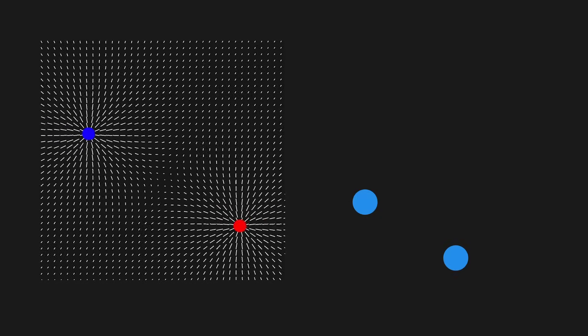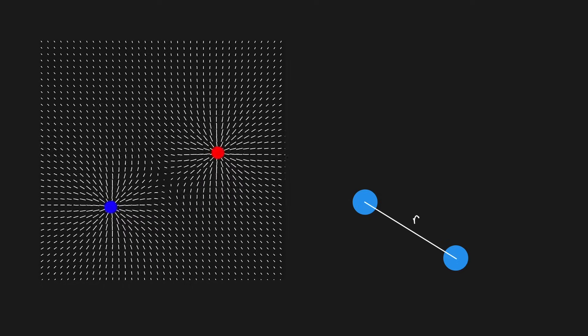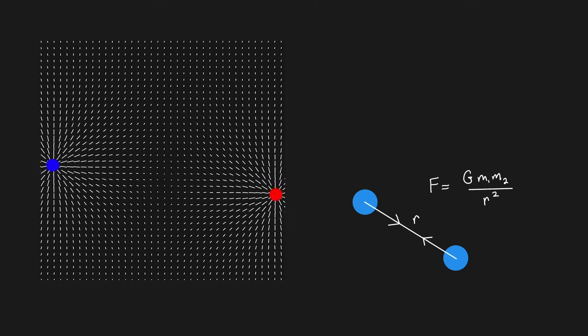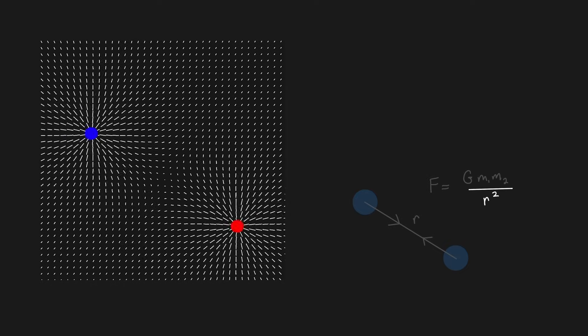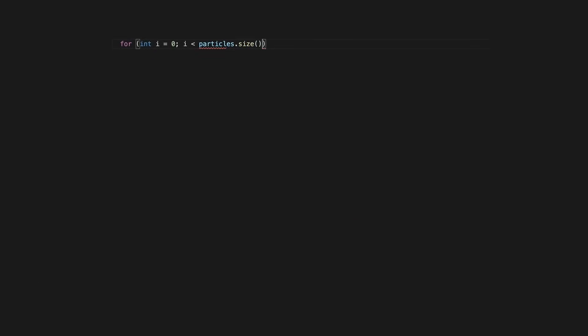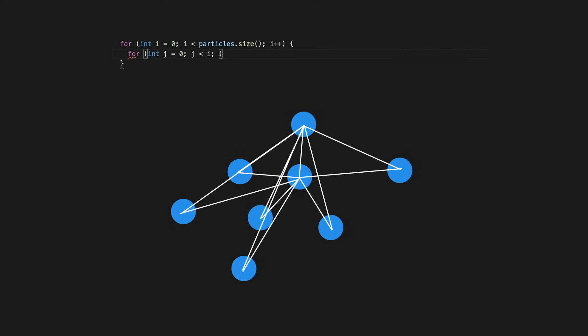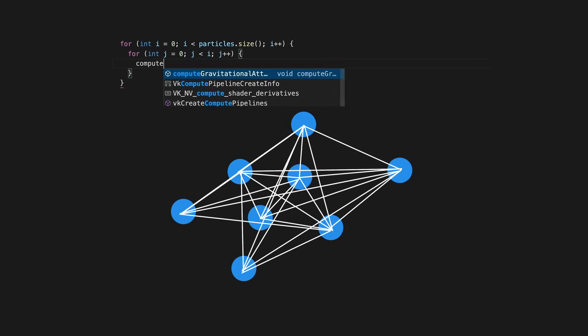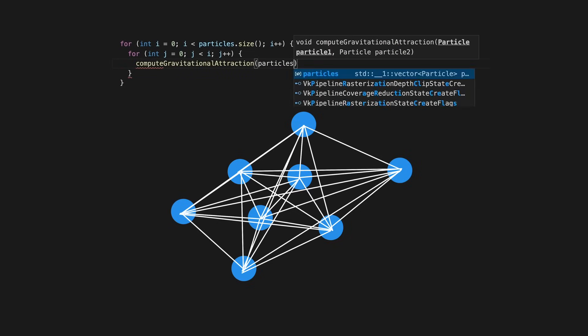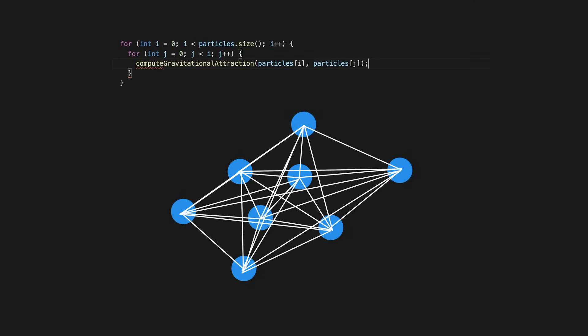I've recently been experimenting with gravity systems. The guiding principle is that every particle exerts a force on every other particle proportional to the inverse square of the distance between them. A very simple implementation may look something like this, where we iterate through each possible pairing and compute the equal but opposite force that each particle exerts on the other. This has a big O complexity of n squared,